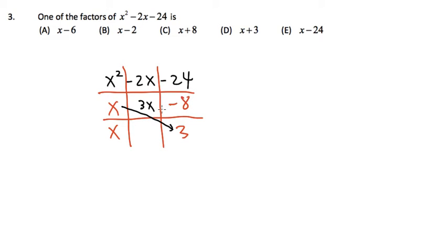And then that will give us negative 8x. And then we'll combine these two results. 3x minus 8x. That will give us negative 5x.